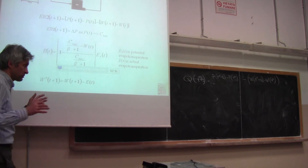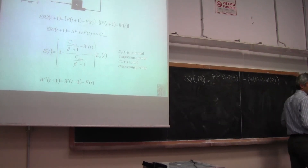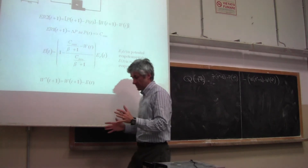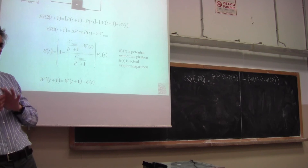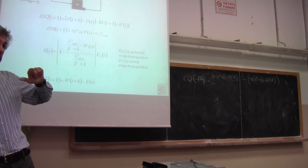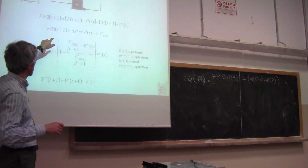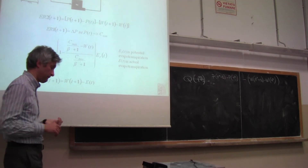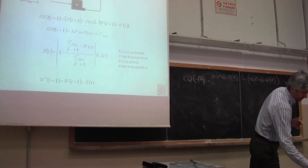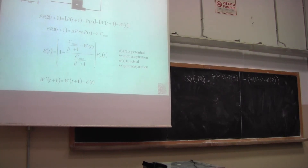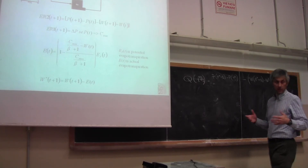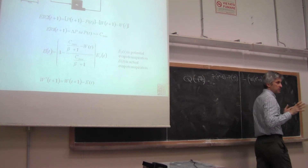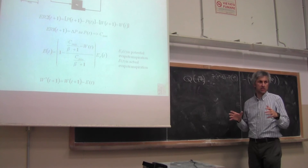By introducing this second relationship, we remove the assumption that rainfall is lower than Cmax. We still need to remove the first assumption — that there is no evapotranspiration. Evapotranspiration is a water loss from the catchment. It reduces the catchment storage through direct evaporation plus transpiration from vegetation.